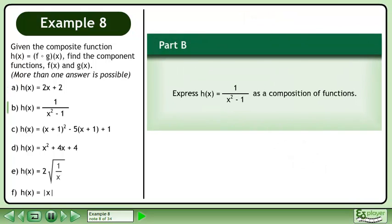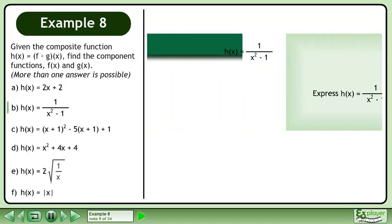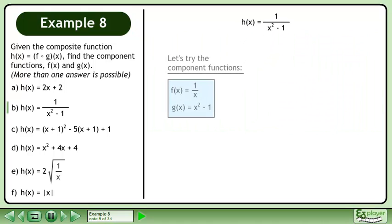In part b, express h equals 1 over x squared minus 1 as a composition of functions. Let's try component functions f and g.